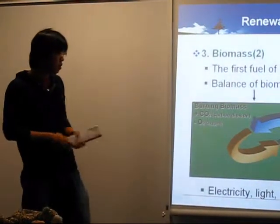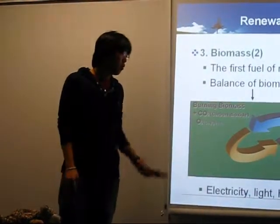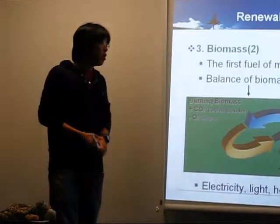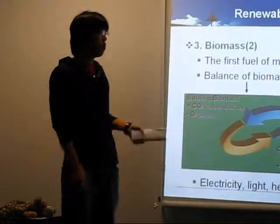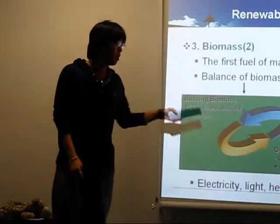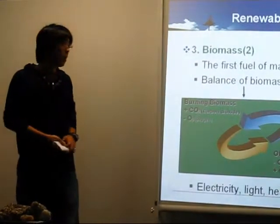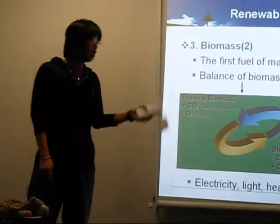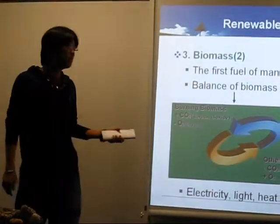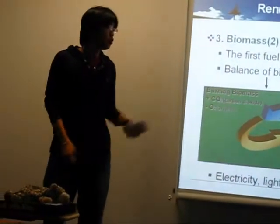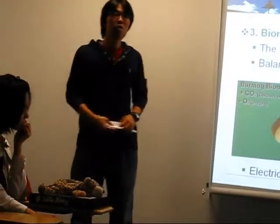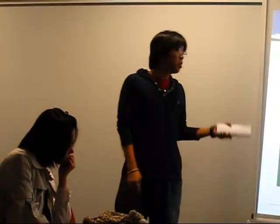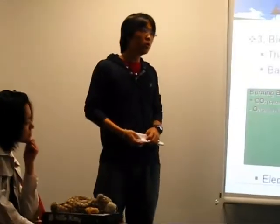So biomass is used to make electricity, light, heat, and fuel. There are many benefits for the environment. It uses waste material. Fuel like ethanol is made from burning biomass. So biomass is used for petrol to run cars. And it can also solve waste problems.